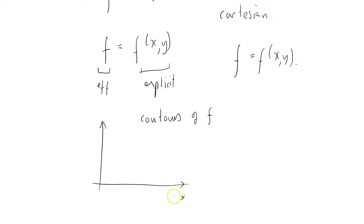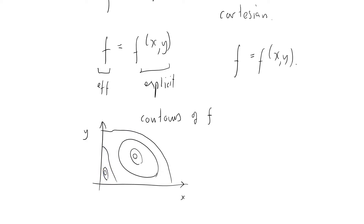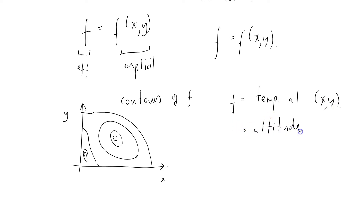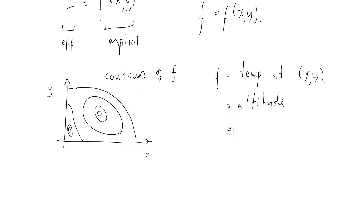There's x, there's y — nice simple Cartesian coordinates. Here are some contours of f; there's a little mountain here and there might be some other contours, local maxima, and all sorts of things going on. I think of f as a temperature at point (x, y), but it could equal the altitude — those would be real contour lines — or it could be a gravitational potential. It could be any scalar function.